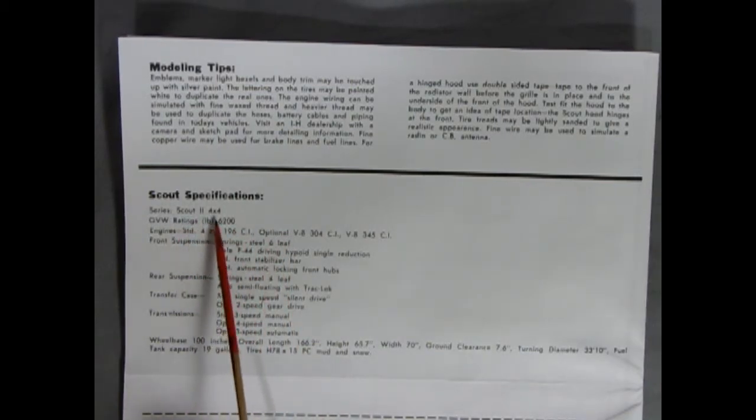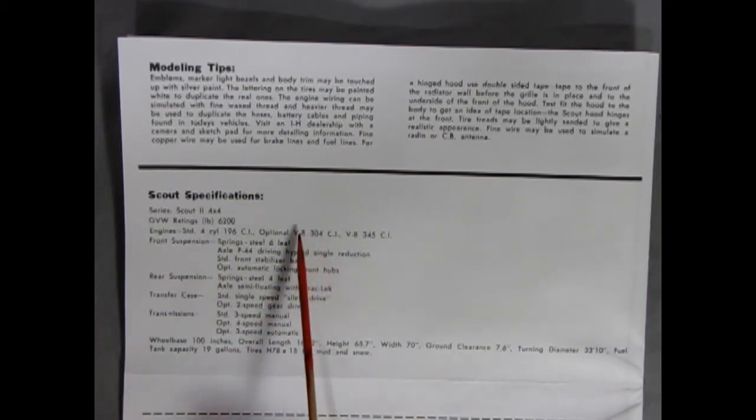Series Scout 2 4x4. It says there is different engines, so you had a standard four-cylinder 196 cubic inch, optional V8 304, which I believe might have been an American Motors engine, and then a 345 cubic inch engine. It tells you all about the springs, the rear suspension, the transfer case, and the transmission, as well as the wheelbase, overall length, height, width, ground clearance, and turning diameter.